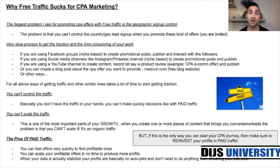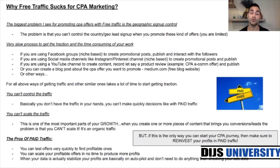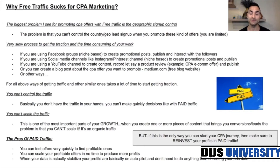With paid traffic — like Facebook ads, for example — you have a campaign, and if something isn't working or you want to scale it, you can make really quick decisions. The fourth point, and most important one, is that you can't scale free traffic. Scaling is one of the most critical parts of growing your CPA marketing business. When you create content that brings you conversions or leads, you can't scale it — it's organic traffic. You can scale paid traffic, but you simply cannot scale free traffic.